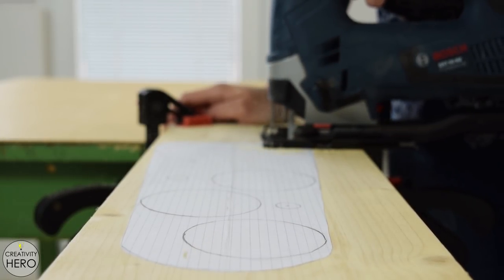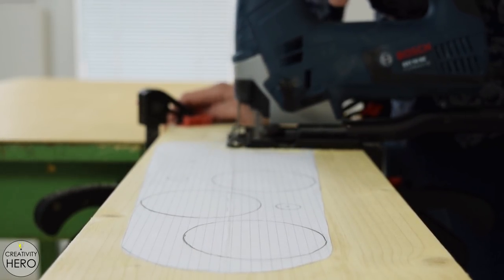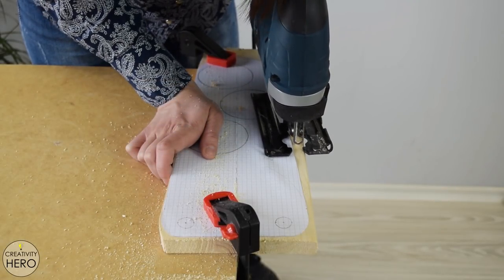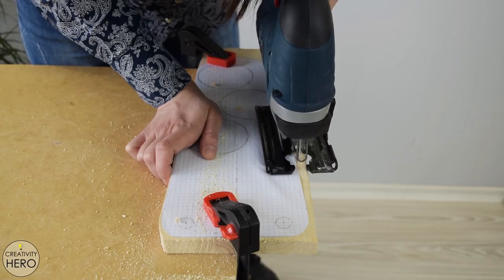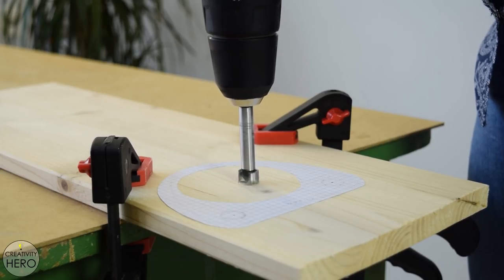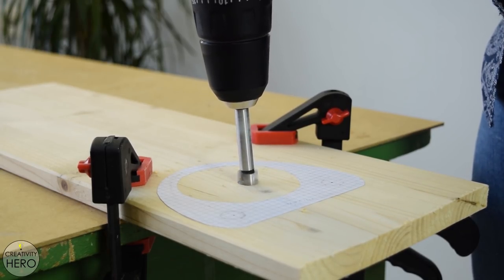Once I was done with the first piece I moved on to the second one and repeated the same process. When I got to the smallest piece I needed to make a large opening in the middle and here is how I did it.